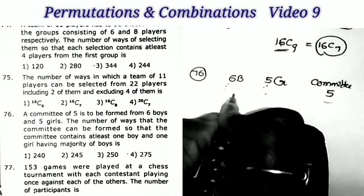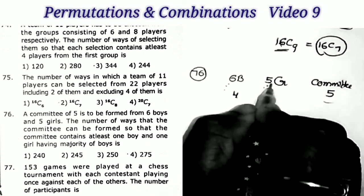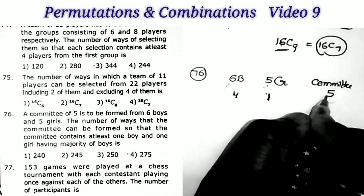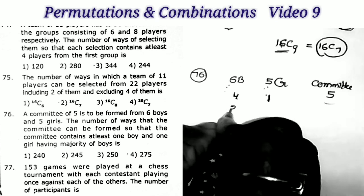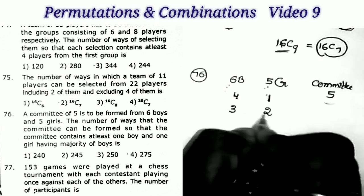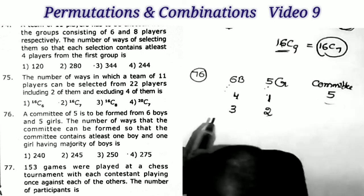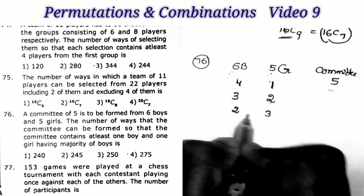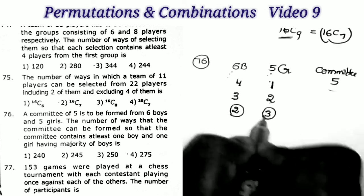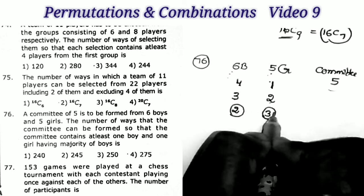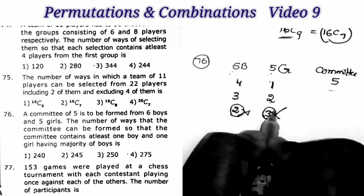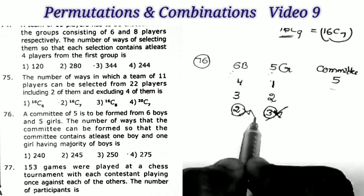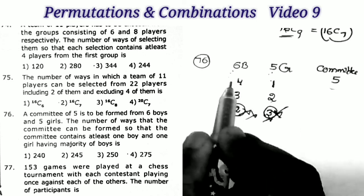Taking 4 boys means 1 girl is needed (4+1=5). Taking 3 boys means 2 girls (3+2=5). If we took 2 boys we'd need 3 girls, giving majority to girls — so we don't consider that case. Only the first two cases apply.